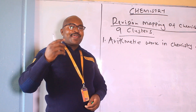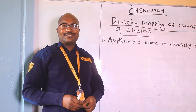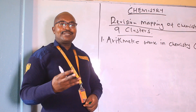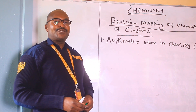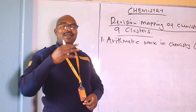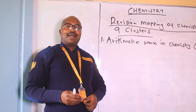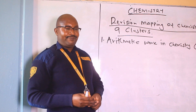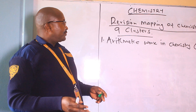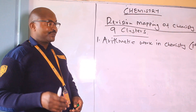Then we have the heat of solution, heat of combustion, heat of formation, heat of displacement, heat of neutralization. We have bond energies, we have lattice hydration and solution. Then we have a calculation on half-life — the last topic in Form 4, that is the topic of radioactivity. So this is the first cluster that we are going to embark on when it comes to calculations.